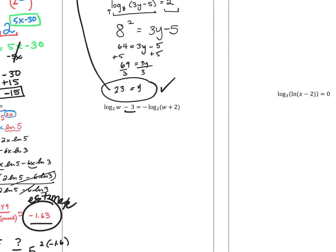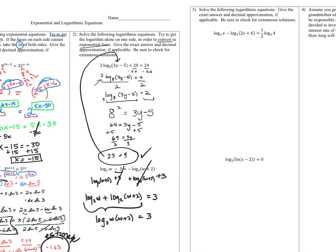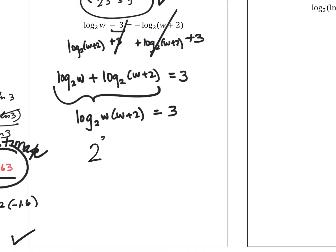The next one: this minus 3 is not part of the parenthesis. We want to get the logs all on one side, so I'll move log base 2 of (w plus 2) over and add 3 to both sides. On the left we have log base 2 of w plus log base 2 of (w plus 2), and those non-log terms cancel, leaving this equal to 3. Using the product property, we combine to a single log: log base 2 of w(w plus 2) equals 3. Converting to exponential form: base 2, exponent 3, equals w(w plus 2), so 8 equals w squared plus 2w.